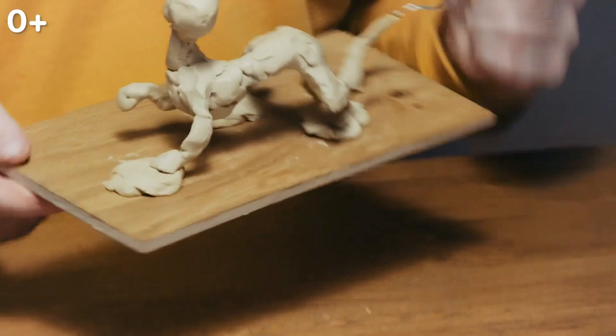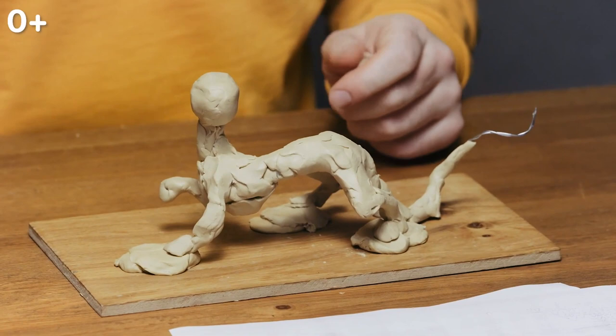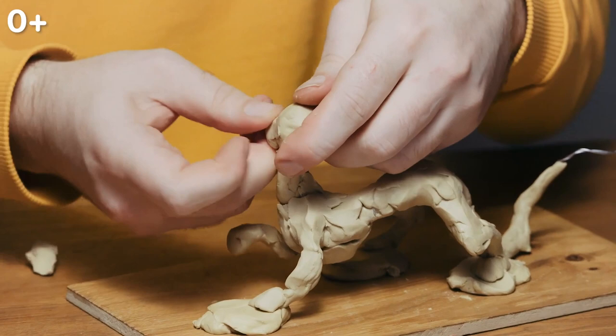And now, let's start working on the head, so that this dragon starts looking like Sisu. I am using my fingers to smooth out the clay and to make the muzzle narrower.